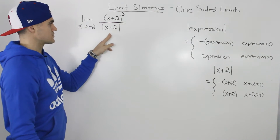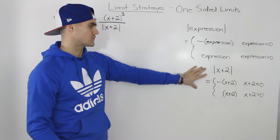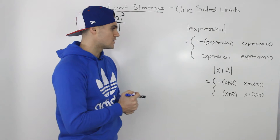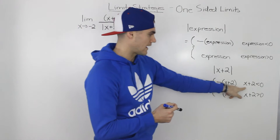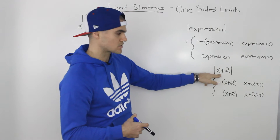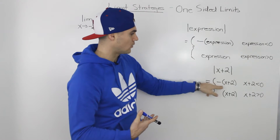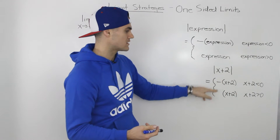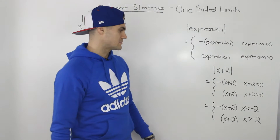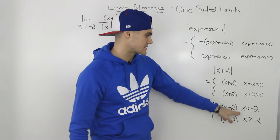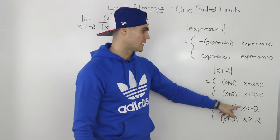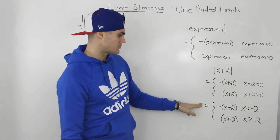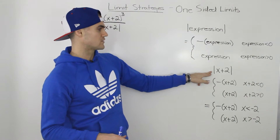The first thing we want to do is take this absolute value of x plus 2 and create a piecewise function for it, using the general result from the overview video. The absolute value of x plus 2, when x plus 2 is less than 0, we take that whole x plus 2 and multiply it by negative 1 to make it positive. If x plus 2 is greater than 0, we just leave it as is. Simplifying the inequalities: x plus 2 less than 0 becomes x less than negative 2, and x plus 2 greater than 0 becomes x greater than negative 2.